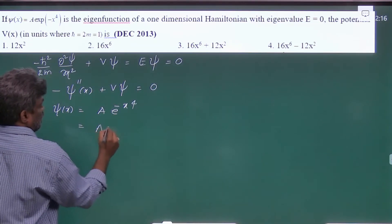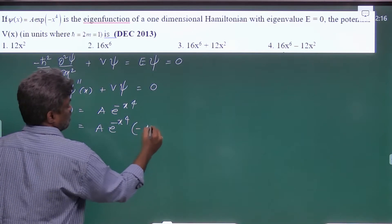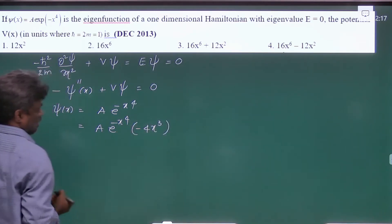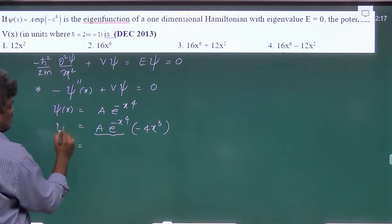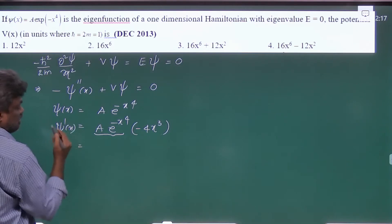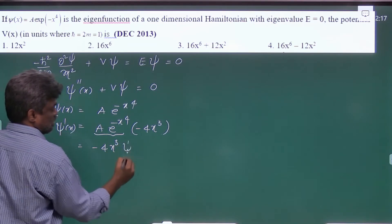This is A·e^(-x^4), and this gives -4x³. This we can write as ψ. So ψ'(x), the first derivative, is -4x³·ψ(x).